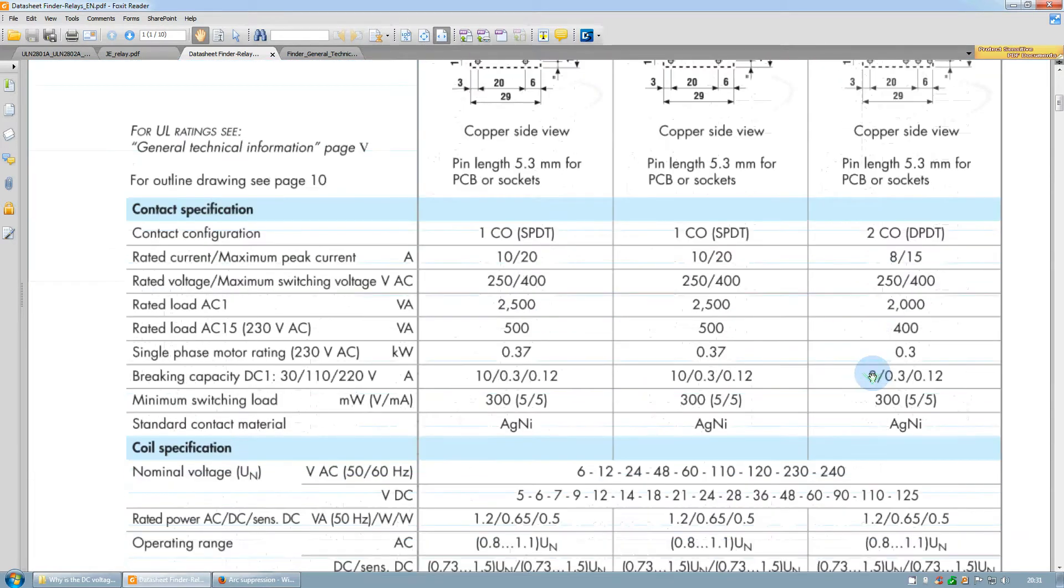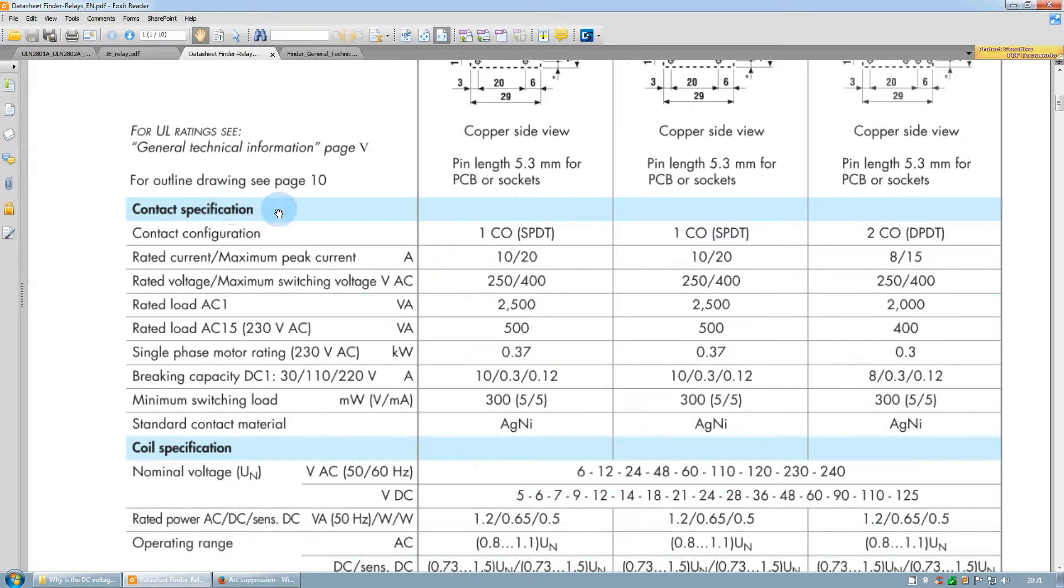We use this relay here: double pole, 8 amps max switching capability. For the 8 amps rated current or 15 amps max peak current, they are rated for an AC voltage of 250 volts. But when we look at the braking capacity for DC loads, the 8 amps can only be switched with a voltage of 30 volts. If you want to switch higher DC voltages, the current capability drops significantly, even to 120 milliamps only.